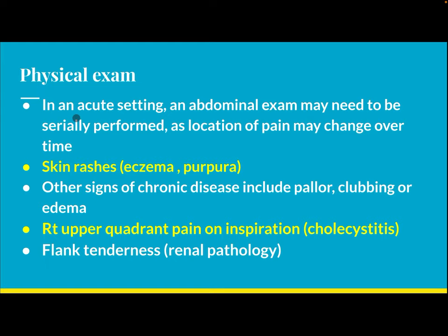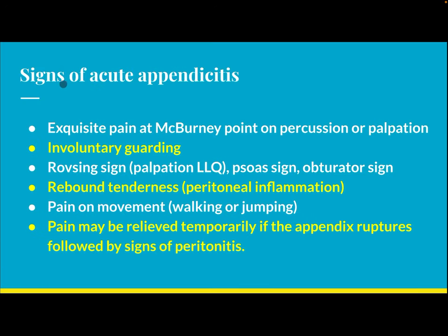Physical examination: in an acute setting, the abdominal exam may need to be serially performed as the location of pain may change over time. Assess skin rash, eczema, purpura, and other signs of chronic disease including pallor, clubbing, or edema. Right upper quadrant pain on inspiration suggests cholecystitis; flank tenderness suggests renal pathology.